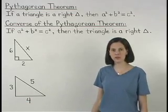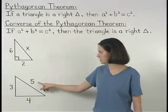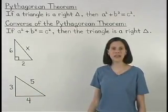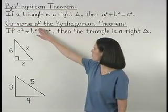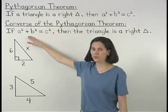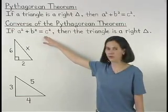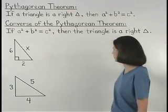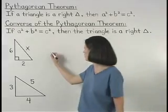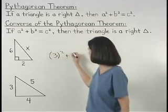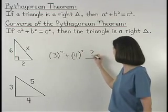So let's say we're given a triangle with sides of lengths 3, 4, and 5, and we're asked to determine if it's a right triangle. The converse of the Pythagorean theorem tells us that if we can show that a squared plus b squared equals c squared, then we'll know that it's a right triangle. So does 3 squared plus 4 squared equal 5 squared?